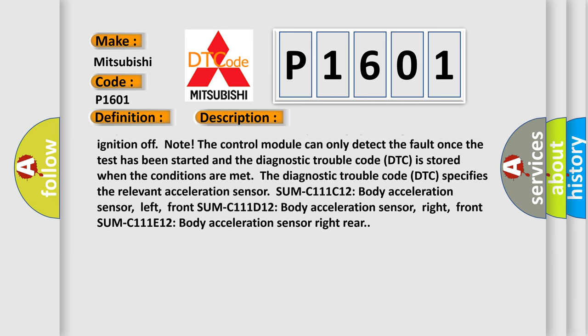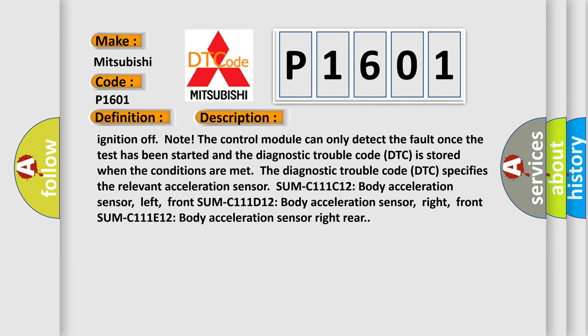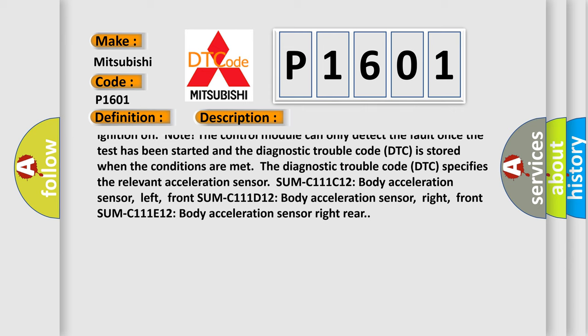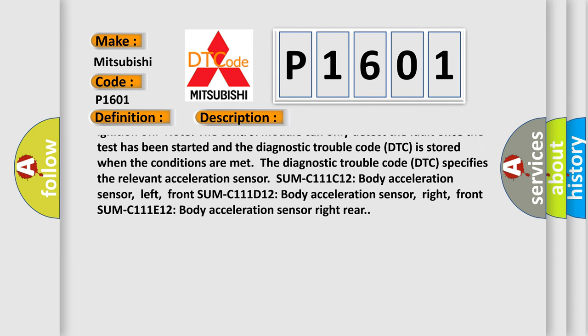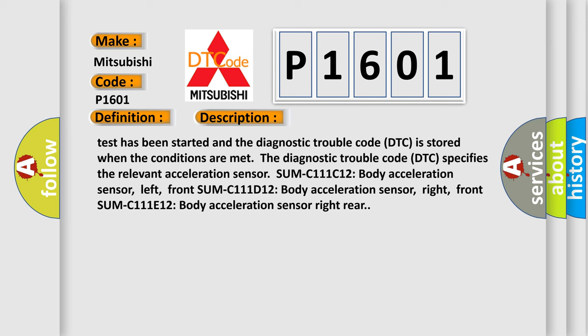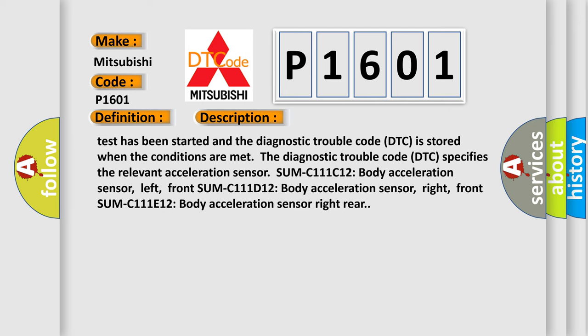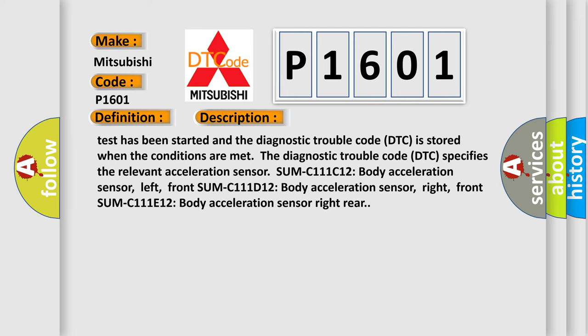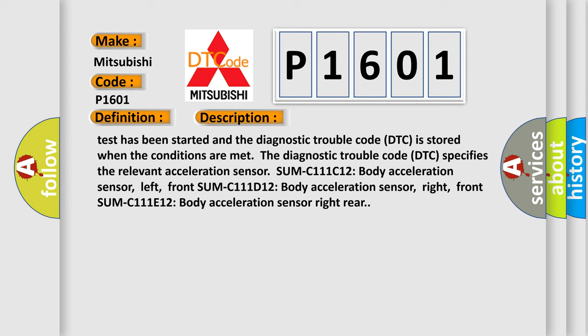The Diagnostic Trouble Code DTC specifies the relevant acceleration sensor: SUM-C111C12 body acceleration sensor left front, SUM-C111D12 body acceleration sensor right front, SUM-C111E12 body acceleration sensor right rear.